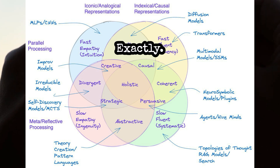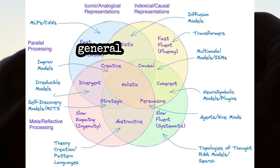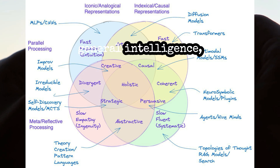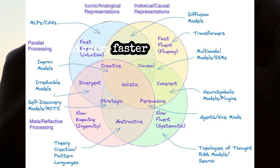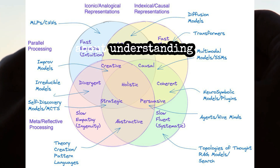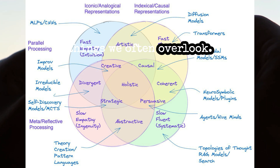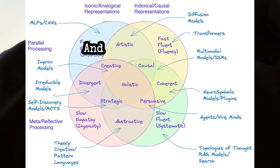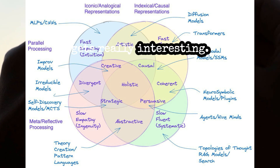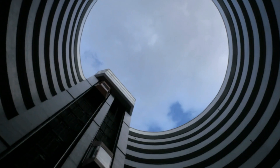True AGI — artificial general intelligence — might not be about building bigger, faster computers. It's about understanding those things we often overlook: intuition, empathy. And this is where it gets really interesting — he brings up pattern languages.